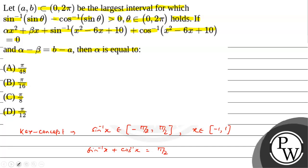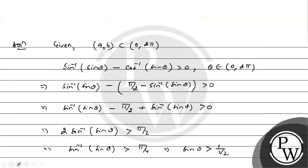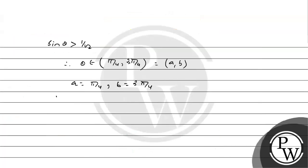AB which is subset (0, 2π). So π/4 to 3π/4. We get b - a as 3π/4 - π/4, that is this gives π/2.